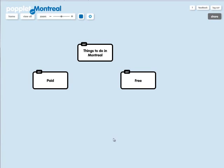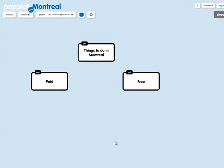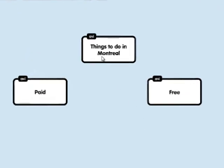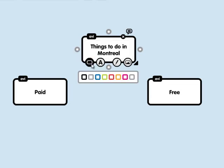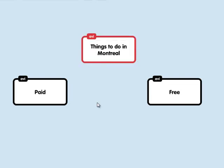If I'd like to change the color of the Poplet, what I can do is click on the Poplet, click on this little button over here, and change the color. Let's make my main idea in red, and let's make my subcategories in blue.